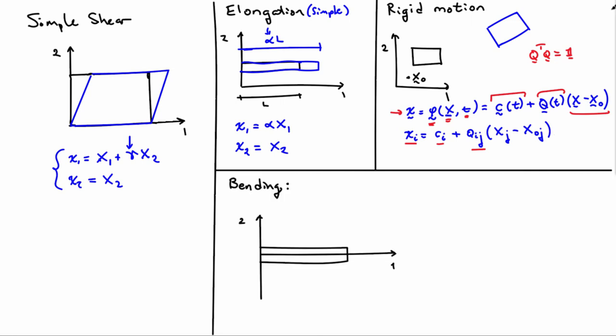The last deformation I want to mention is bending deformation. In bending deformation you have a thin body oriented in this case in the one direction, and again we'll do this as a two dimensional case.